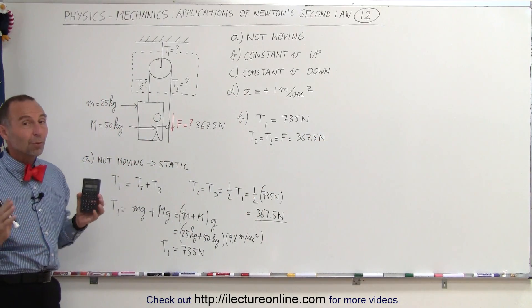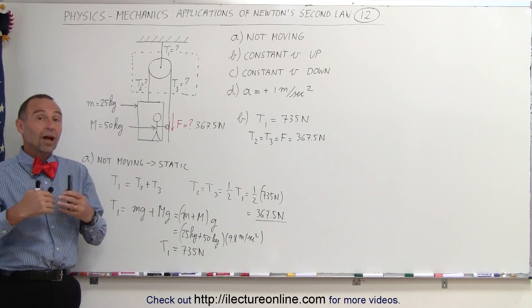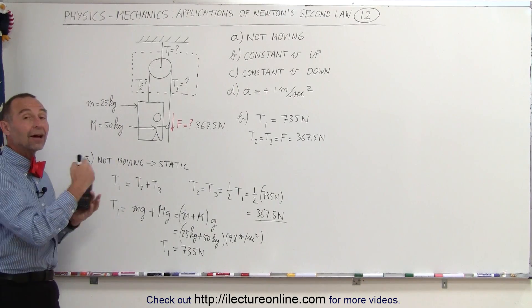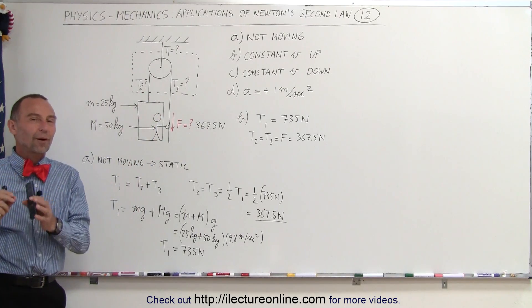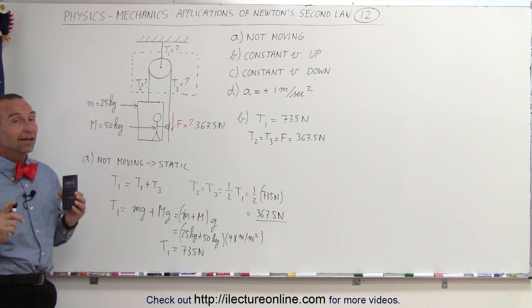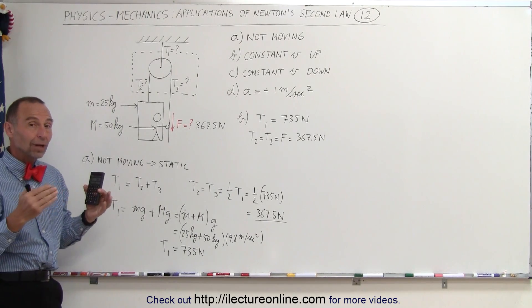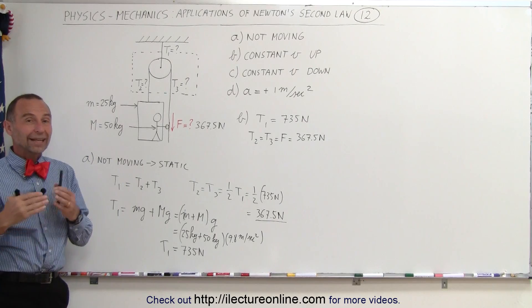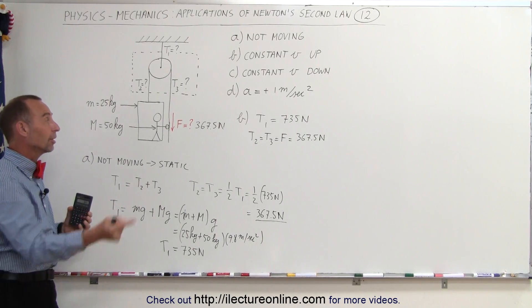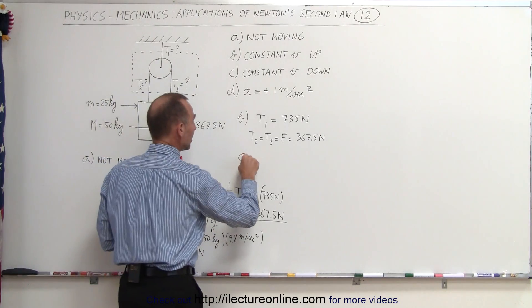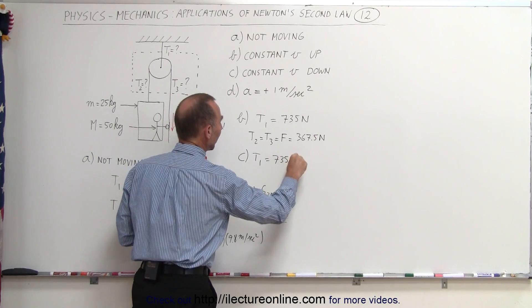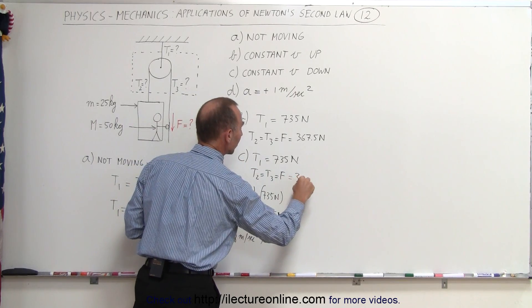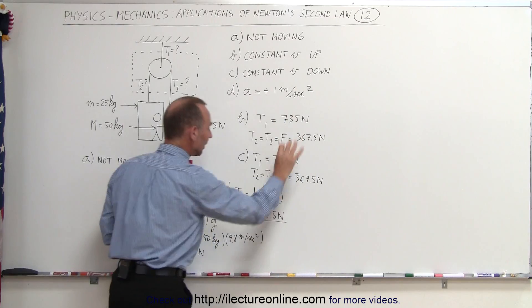This seems counterintuitive, but Newton's First Law tells us that an object in motion continues in motion without change as long as no outside forces act on it — so no additional force is needed. For Part C, constant velocity downward, the same law applies: an object in motion stays in motion. T1 = 735 newtons, and T2 = T3 = force = 367.5 newtons.